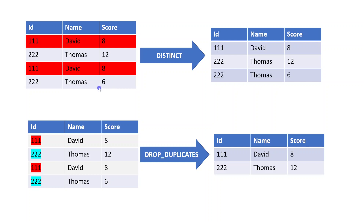But if we consider only a subset of columns — say id and name — then 111 David and 111 David are duplicate, and similarly 222 Thomas and 222 Thomas are also duplicate. That is what is meant by subset: identifying duplicates based on only a portion of the available columns.